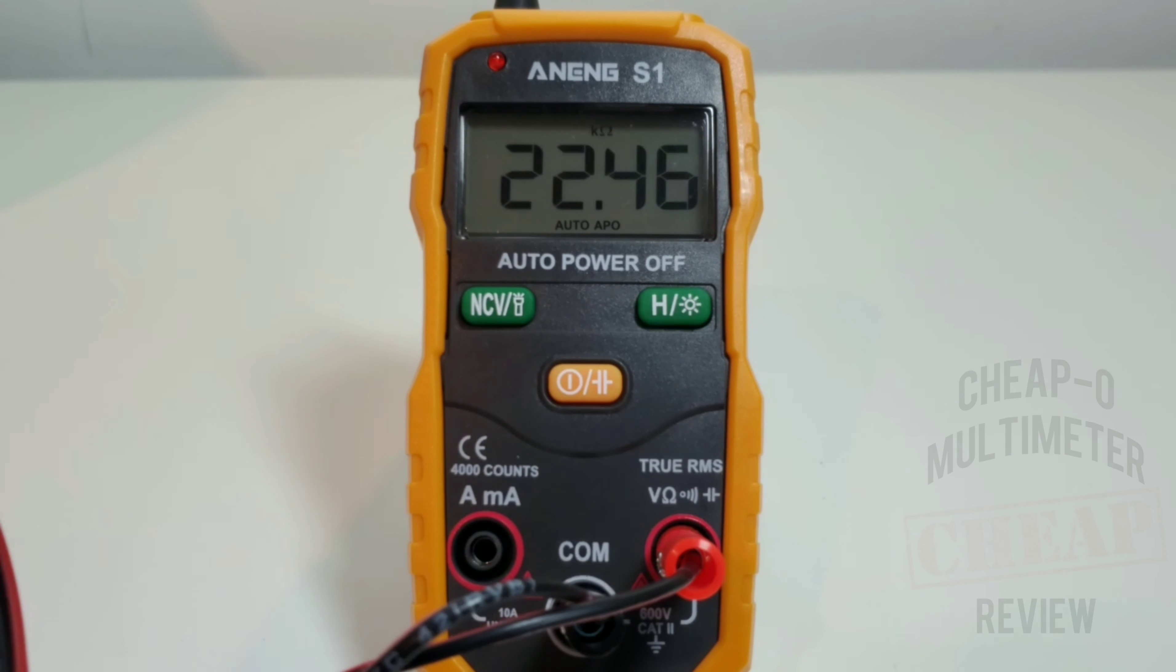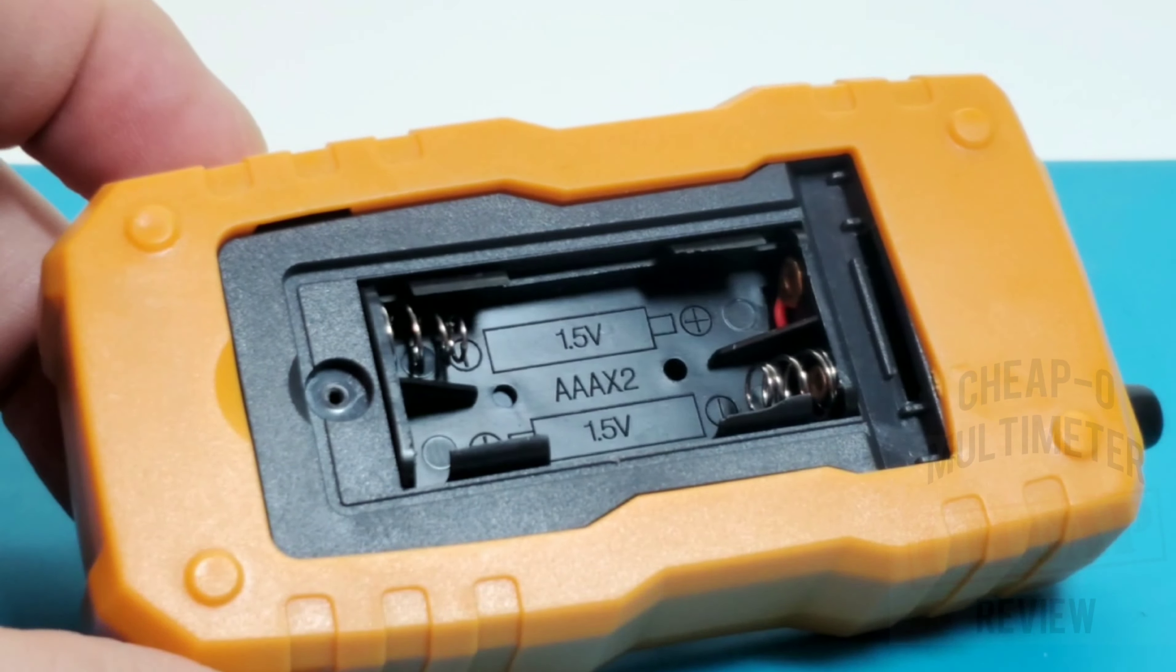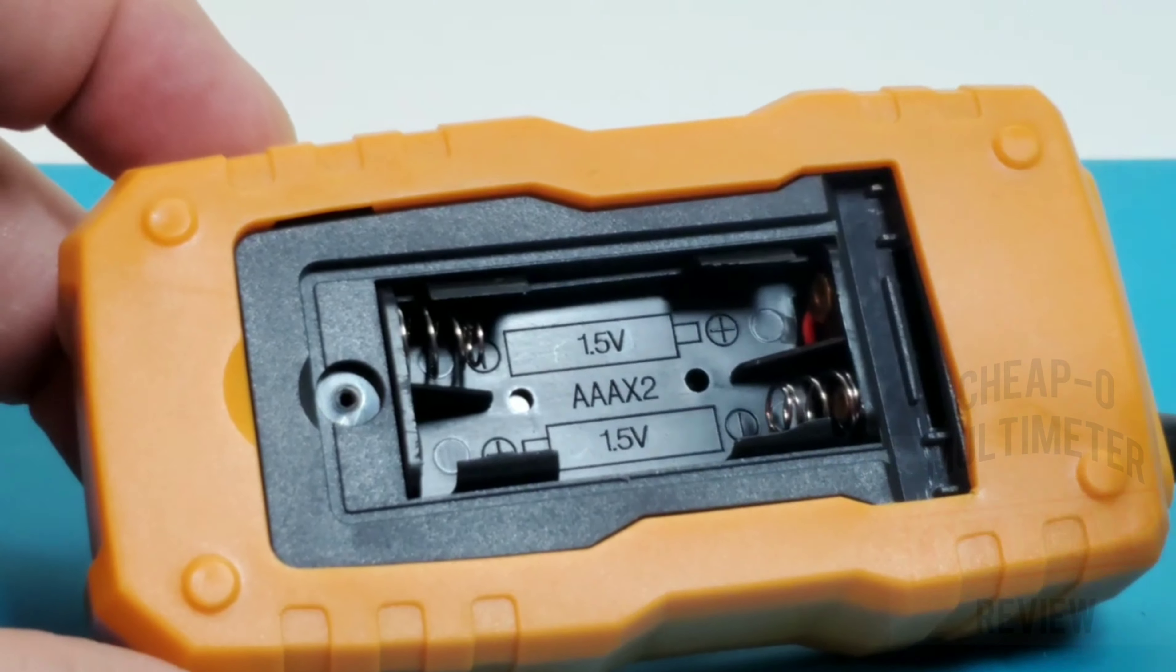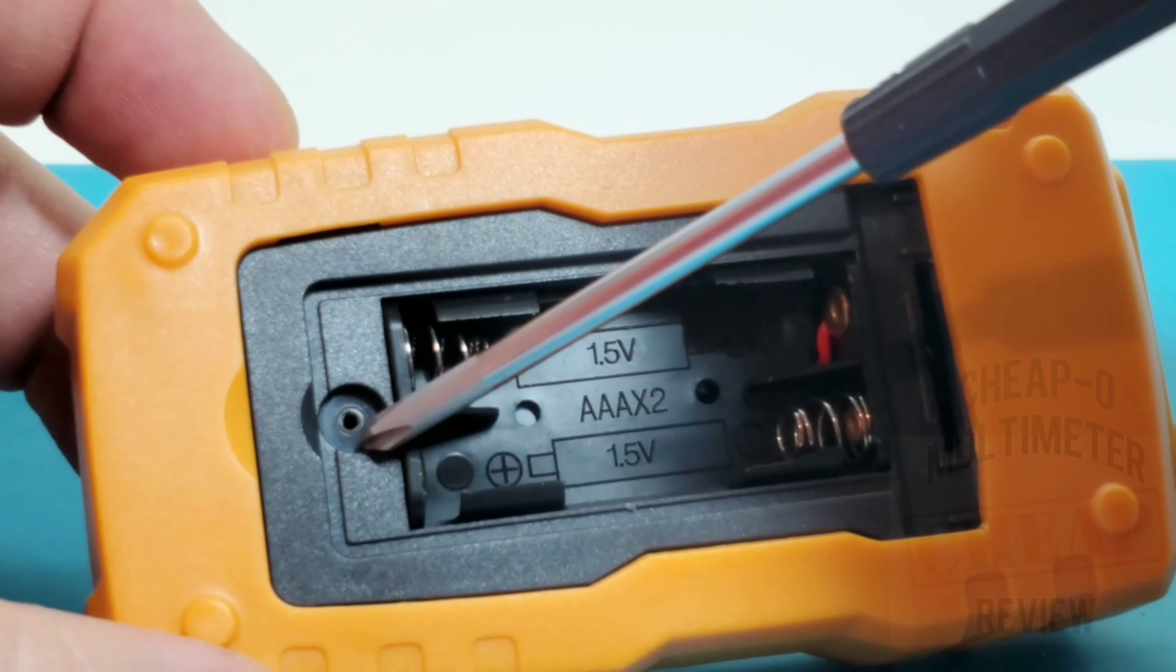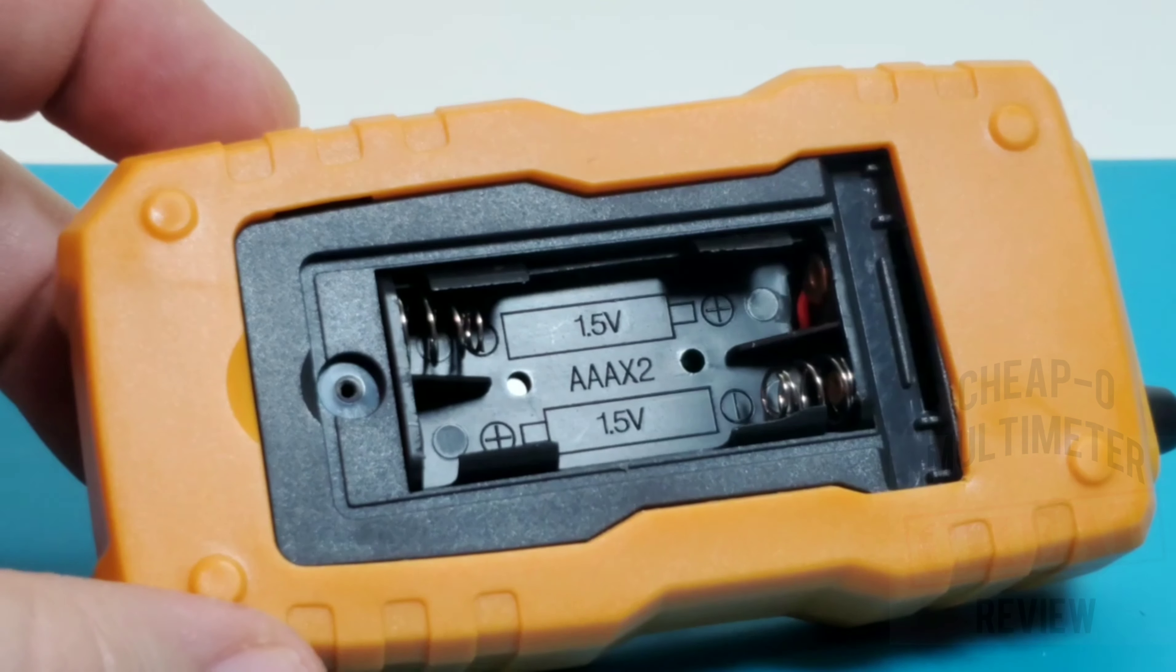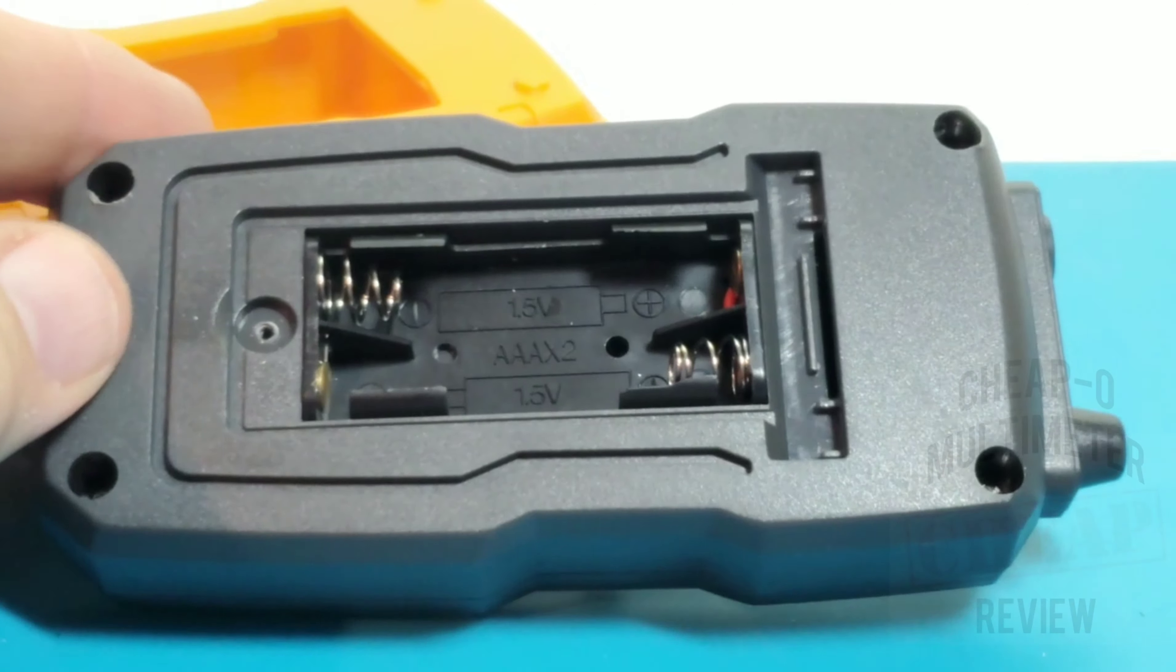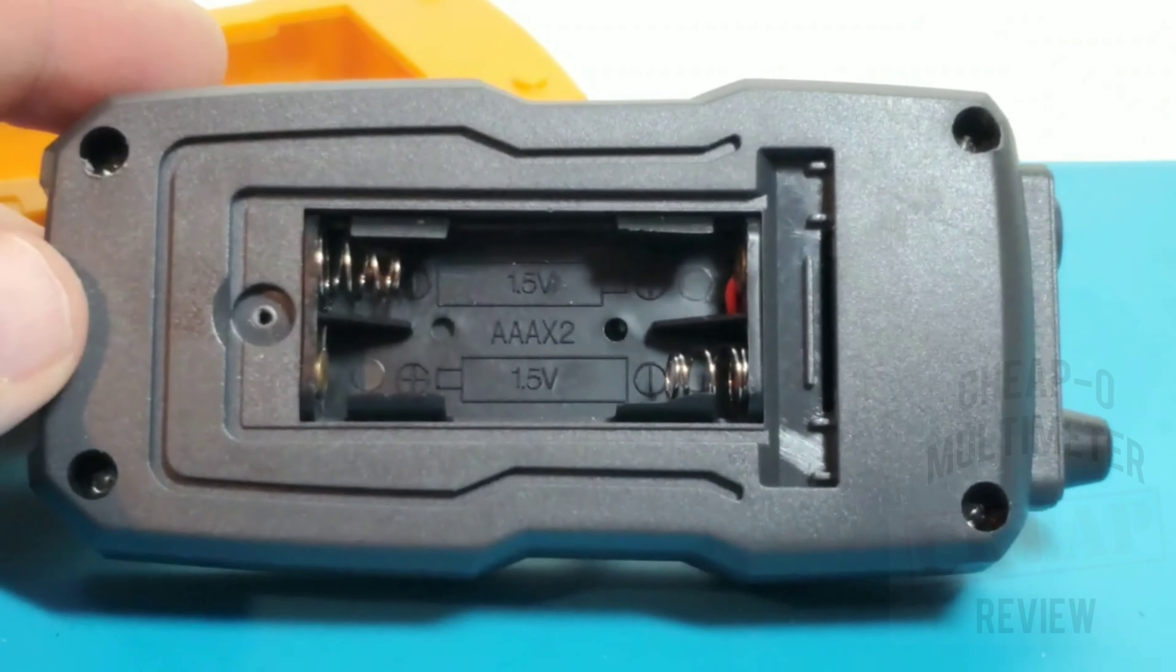All righty, it's time to take ANENG S1 apart. Yeah, let's see what it's... all right, so boo hoo, as you can see we do not have any brass standoffs, it's just going straight straight into plastic. Don't like it. Once we have the boot off, it's just that kind of really cheap plasticky feel. We've got, wow, one, two, three, four Phillips screws holding this tiny little thing together.